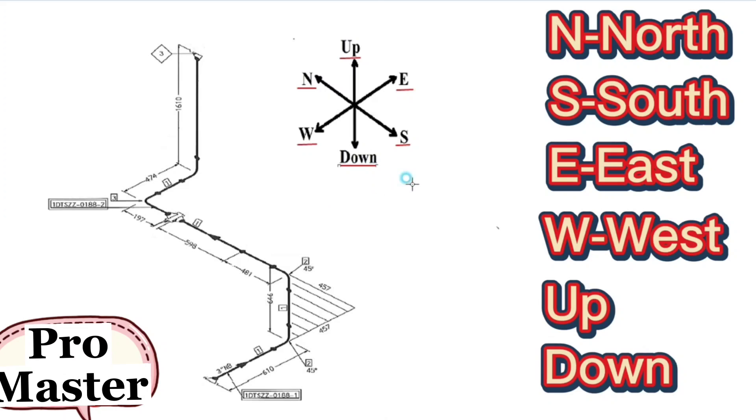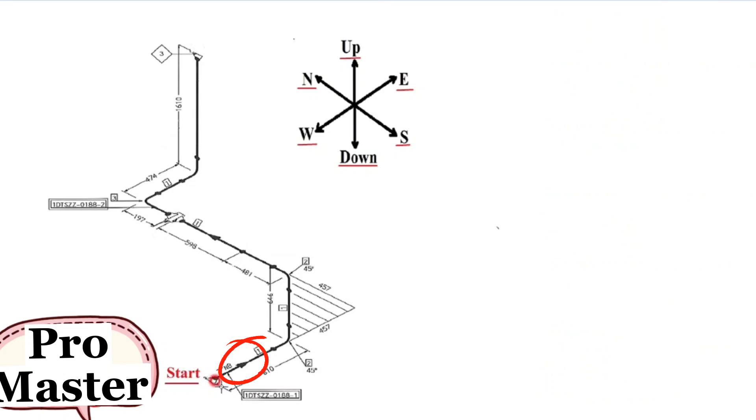By studying these directions we can easily read the pipe isometry. We will start reading the pipe isometric from this point because the direction of the arrow on the pipe drawing is in this direction.